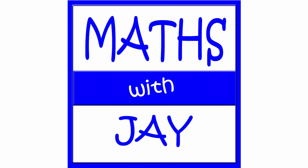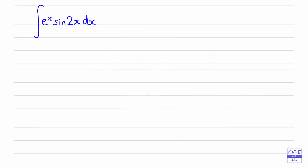Hello, welcome to Maths with Jay. We're going to integrate by parts, so let's write down the formula for that. If we're integrating the product of u and dv/dx with respect to x, then we get uv minus the integral of v times du/dx dx.